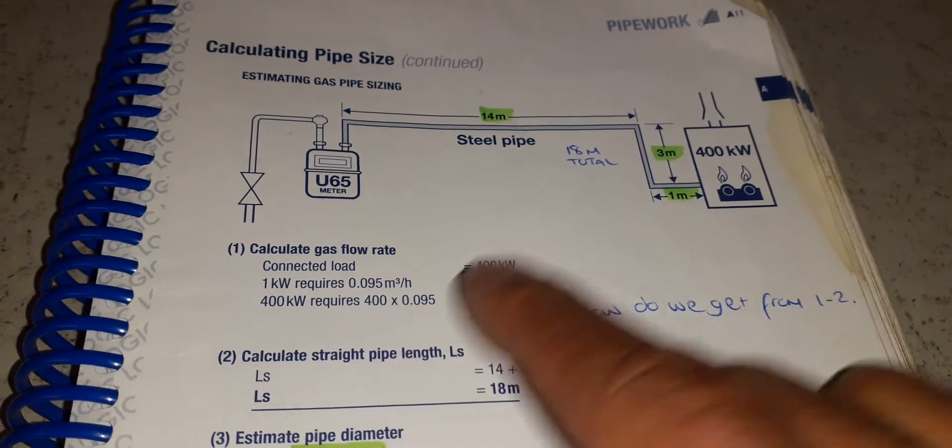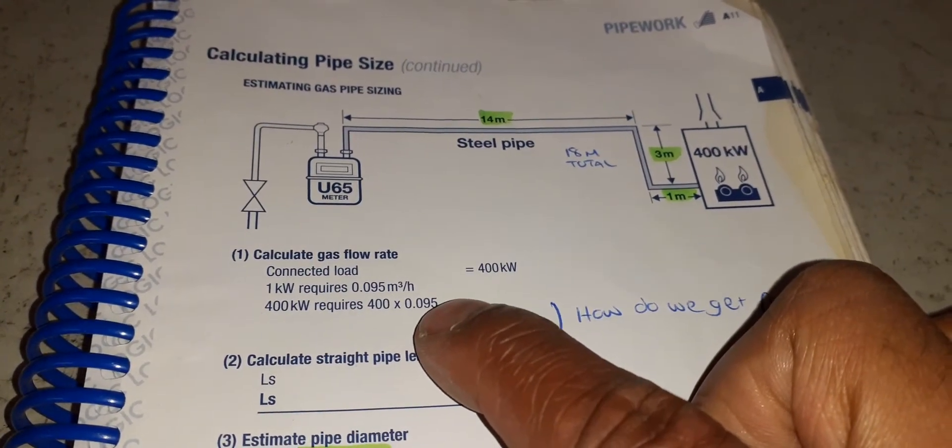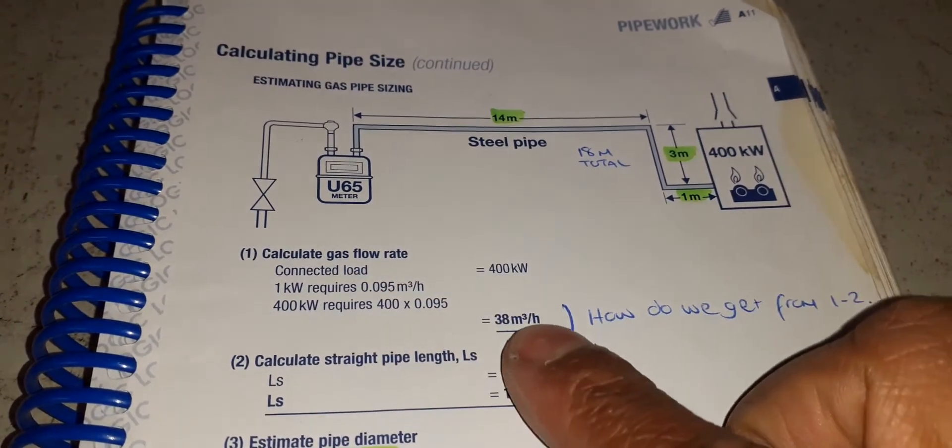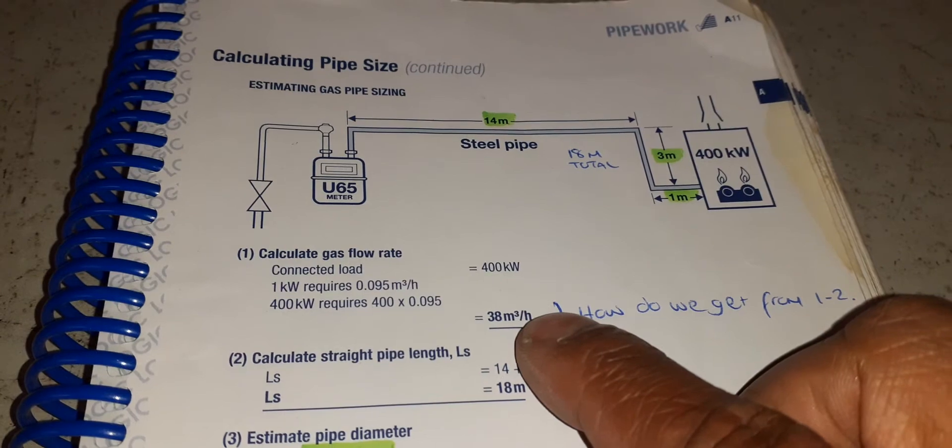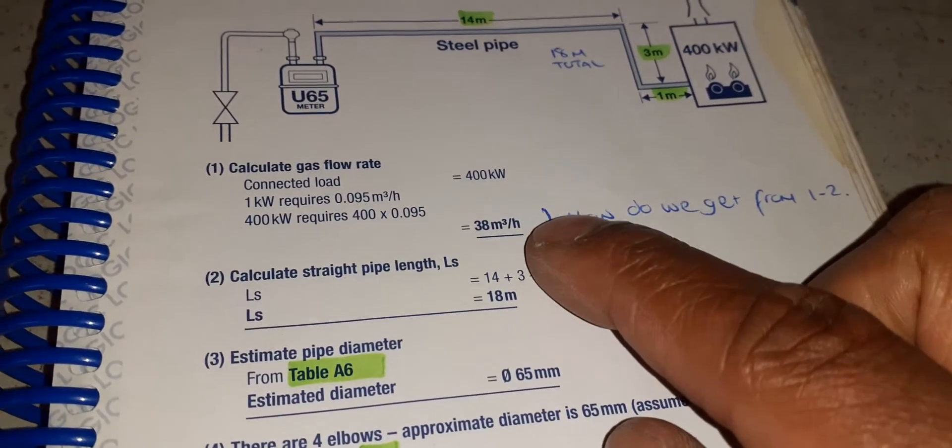So we just got 400 kilowatts that we have here and we times it by the 0.095 that is required per kilowatt, and we end up with 38 meters cubed of gas an hour.